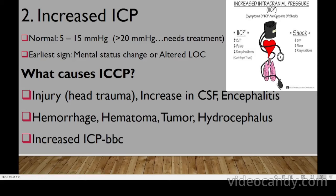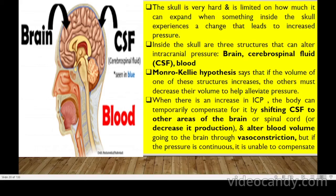The signs of increased ICP are the complete opposite of shock. In shock, we expect decreased BP, increased pulse and respiration as compensation. In increased ICP, the patient will have increased BP, reduced pulse, and reduced respiration — what we commonly refer to as the Cushing triad.